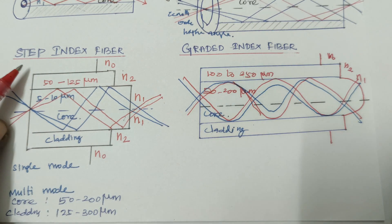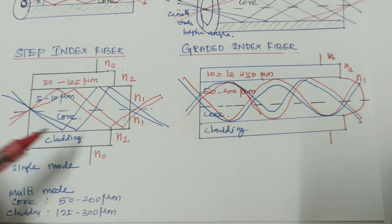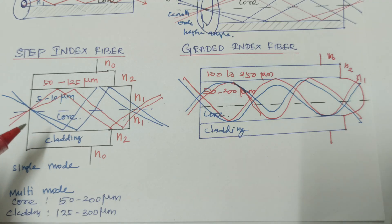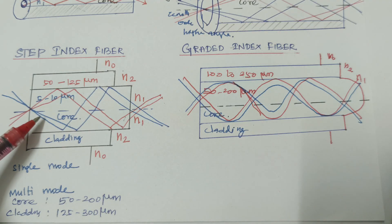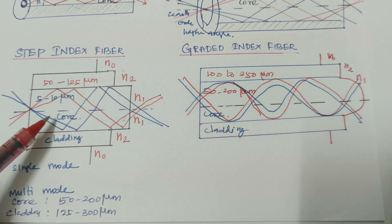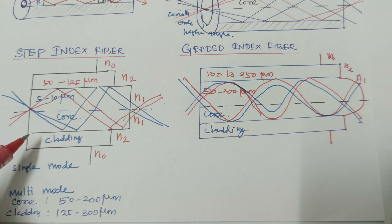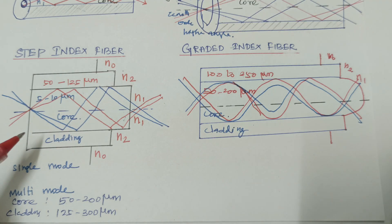Advantages of step index fiber: the light source used is an LED, and they are easier to operate. The LED has a longer lifetime compared to laser diodes. Step index fibers are also less expensive and the structure is not complicated. The disadvantage is that they suffer from intermodal dispersion.